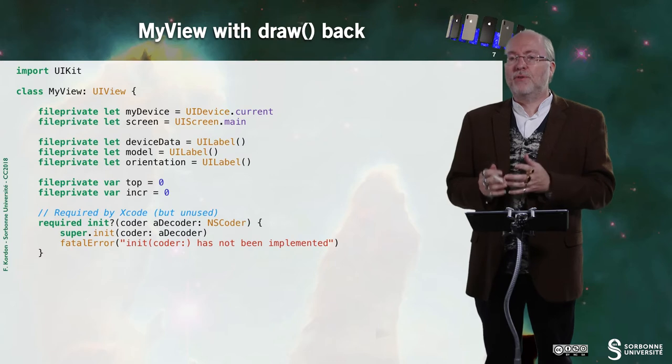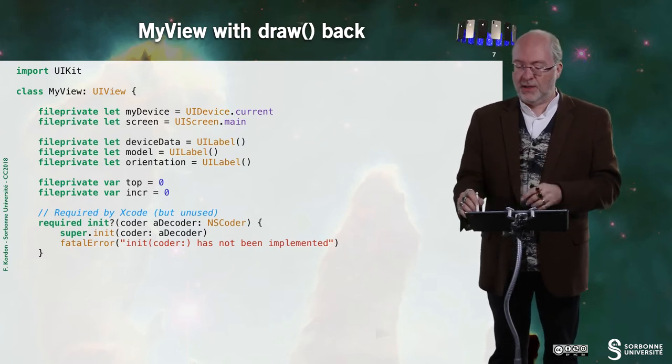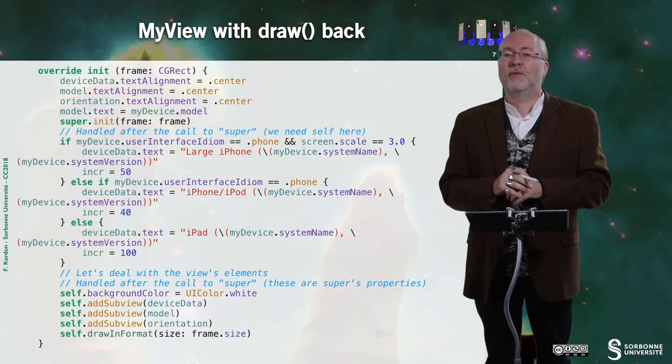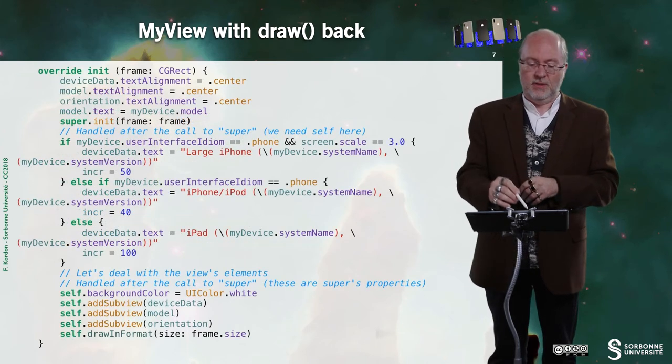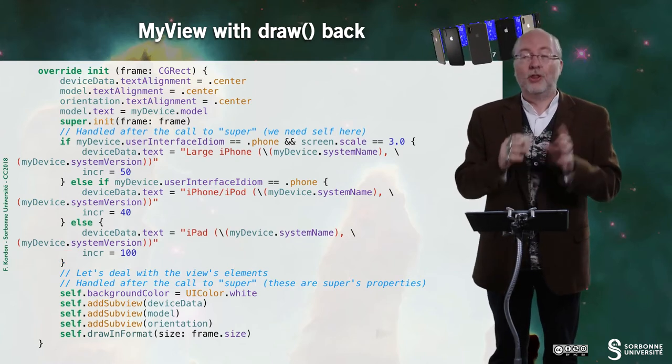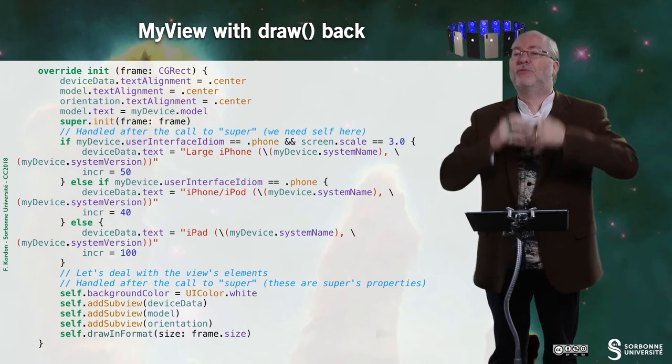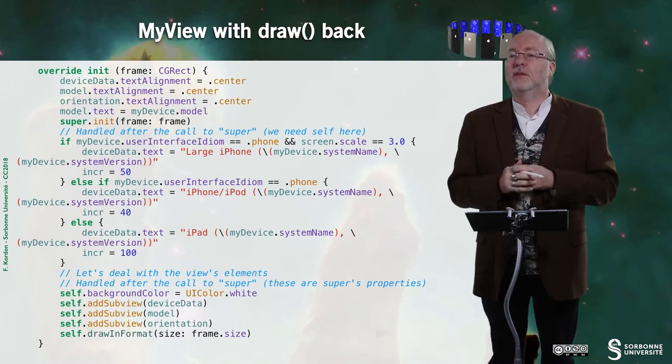And, in my view, so, I still have the initialization, etc. I don't go again over this part. And I have the init. And the init just handles the labels and sets the values of the label that will not change according to the device orientation.